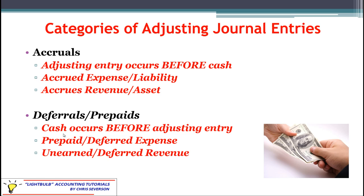There are two main categories of adjusting journal entries, each with their own two types. For accruals, the adjusting entry occurs before the cash transaction; these include accrued expenses (also known as accrued liabilities) and accrued revenues (also known as accrued assets). The second main category is deferrals or prepaids, where cash occurs before the adjusting entry; these include prepaid or deferred expenses and unearned or deferred revenues.